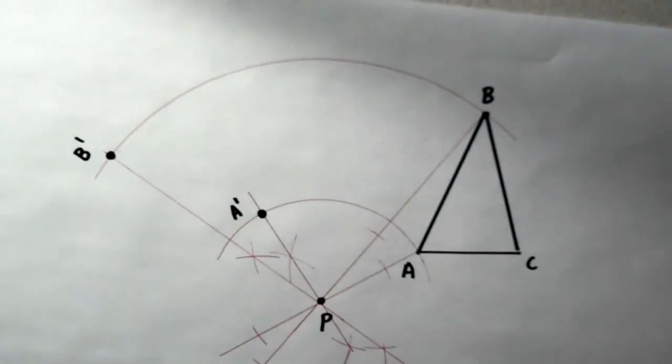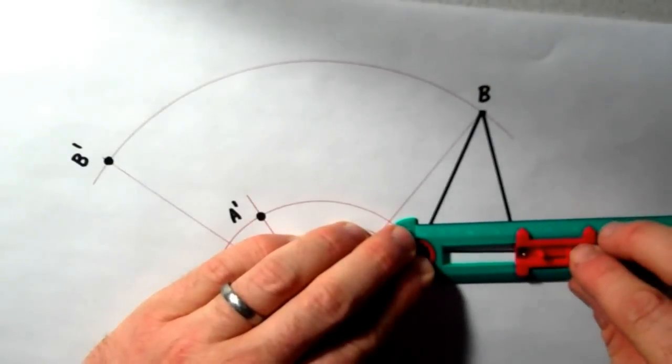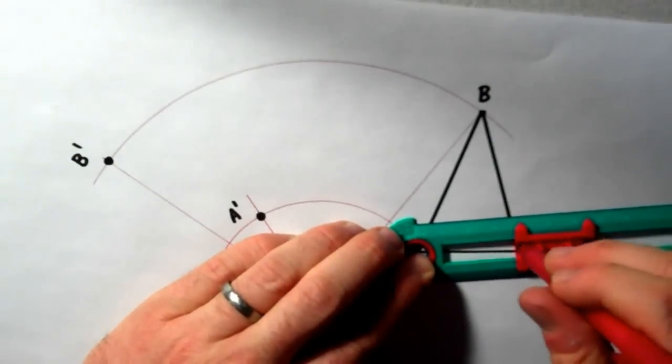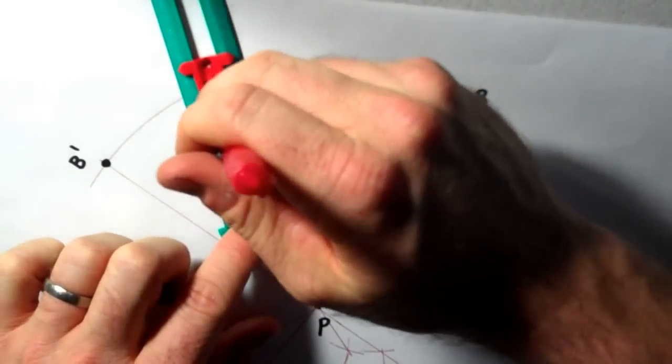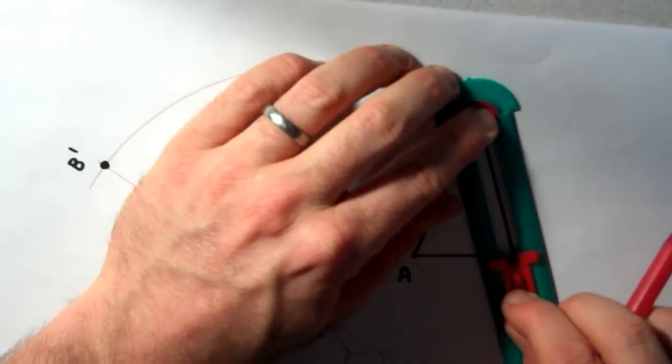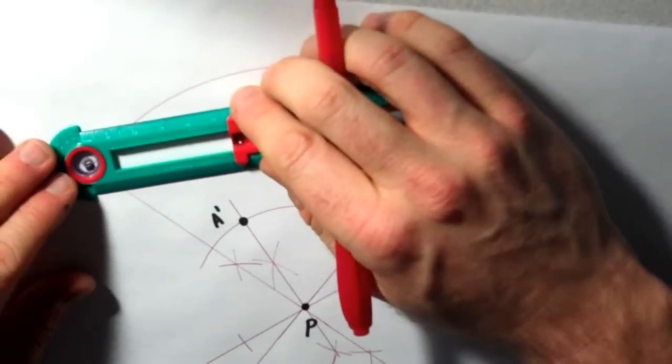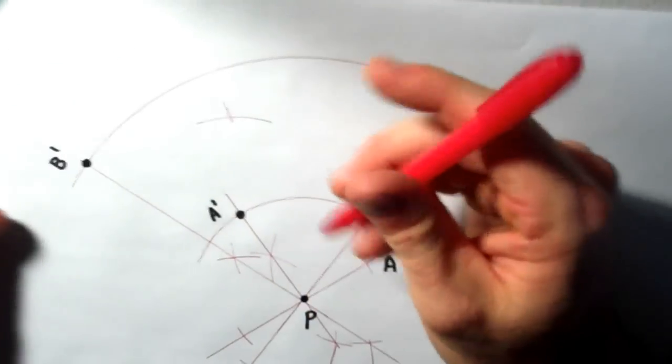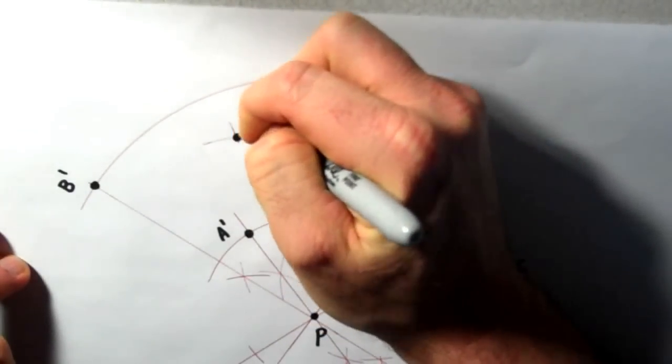And to construct C, I don't need to repeat this process. I could if I wanted to, but I could actually use my original triangle to create C prime. So if I measure the distance from A to C and I copy that distance from A prime, it's going to be out here somewhere. And then I measure the distance from B to C and recreate that distance from B prime. Where those two marks intersect, that's going to be C prime.